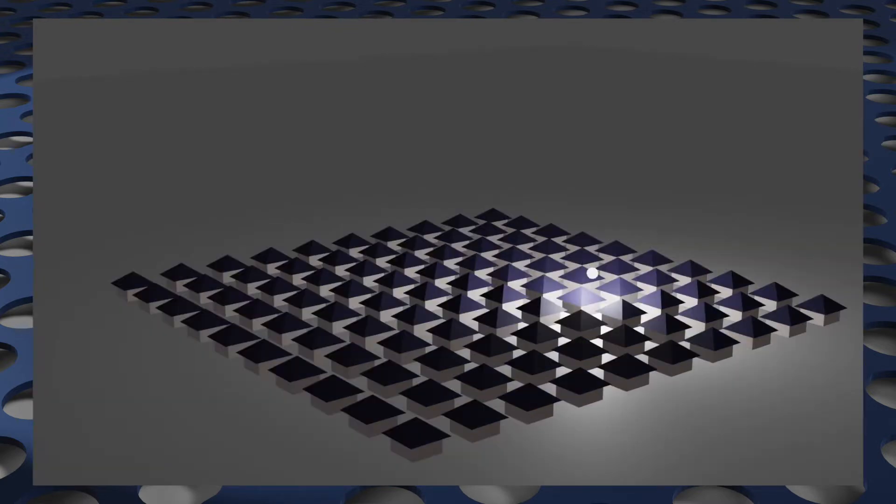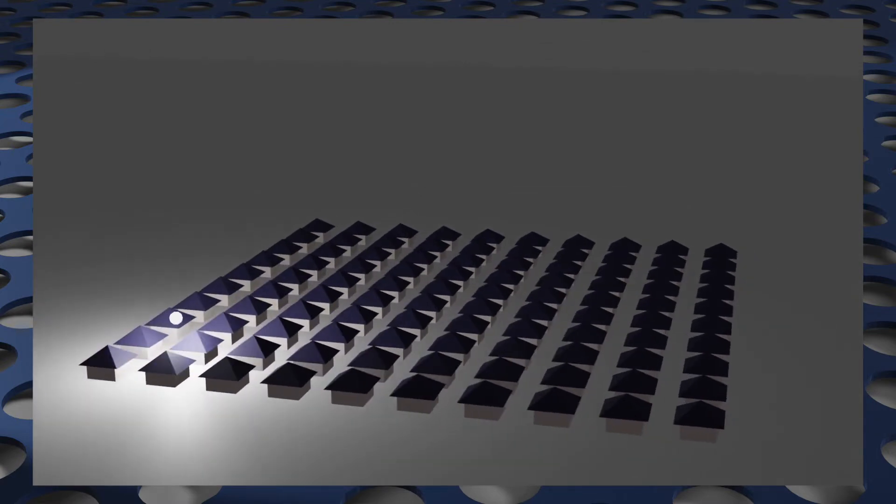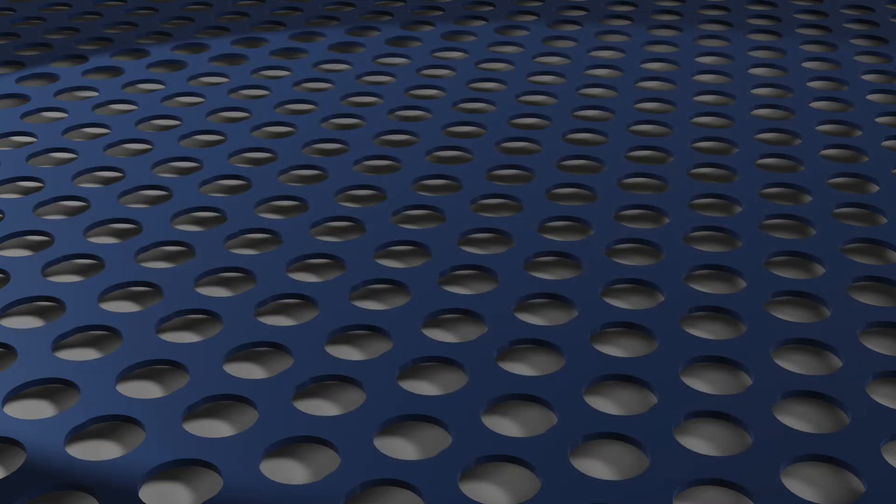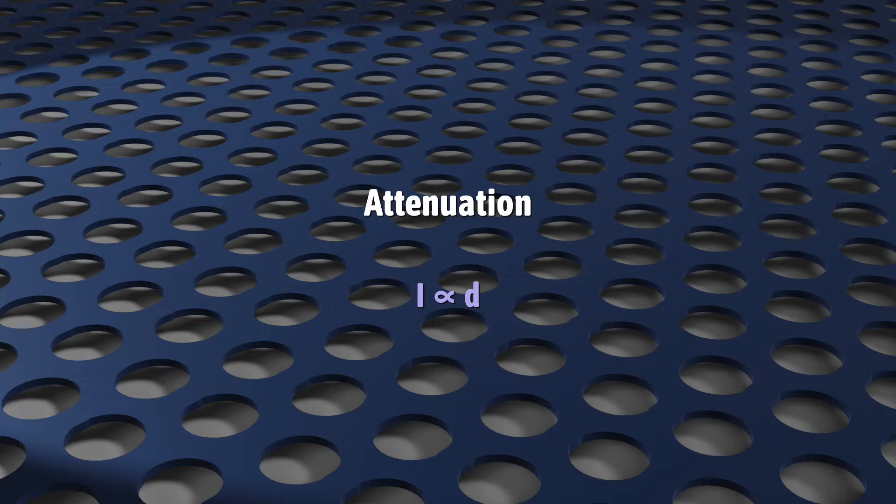For point lighting, all this changes. First, the direction will depend on where the surface is in relation to the light. But second, the intensity of that light will change depending on the distance between the surface and the light. This second effect is called attenuation, and it's the critical feature of point lighting.